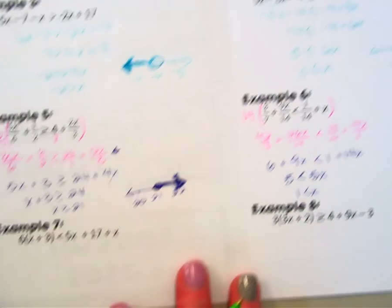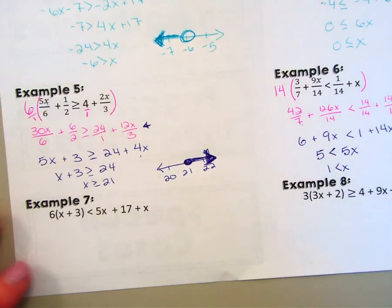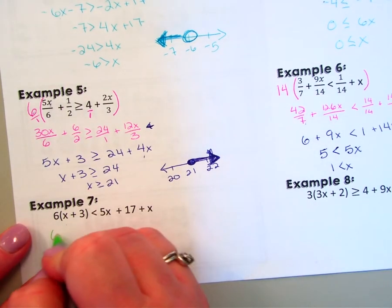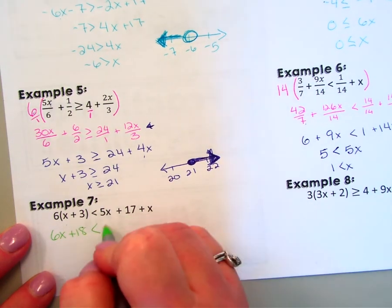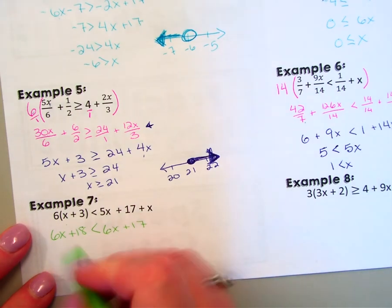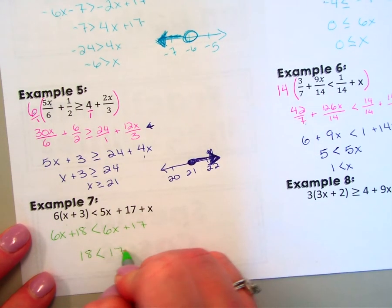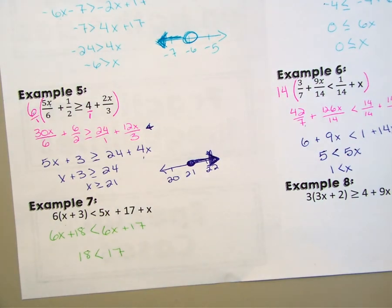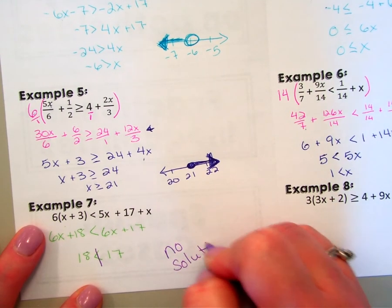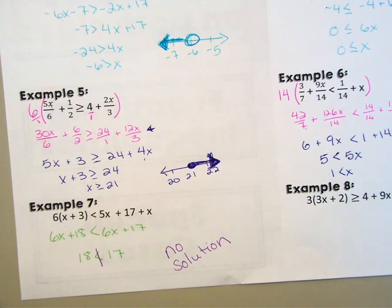Alright, last one, or last set I should say. Number 7. So because I have variables on both sides, I just got to start combining, so I'm going to do distributive property over on the left. 5x plus 1x gives me 6x over there on the right. So then when I subtract my 6x over, they actually end up canceling on both sides, so I'm left with 18 is less than 17, which is not a true statement. 18 is not less than 17, so that's not true. So this really is no solution. When you're solving, that may happen, and so if you end up with an inequality that is not true, that is a no solution.